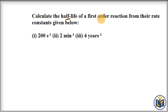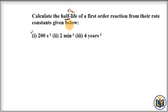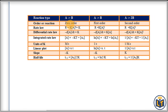The problem says: calculate half-life for a first-order reaction. The rate constant values are given, and from these values we have to find out the half-life, denoted T½. For different orders of reaction, there is a different relation between half-life and rate constant K.